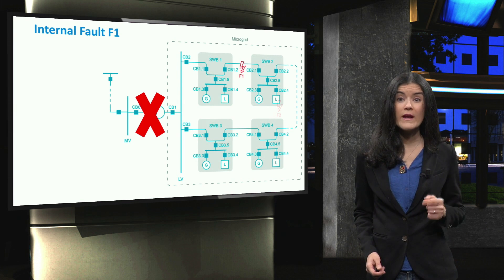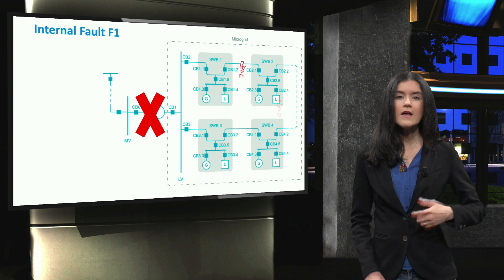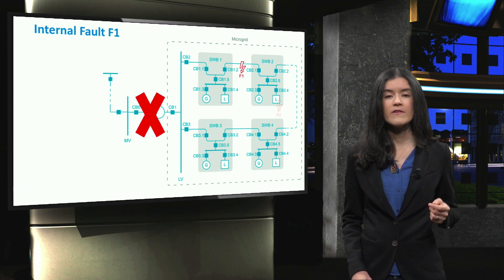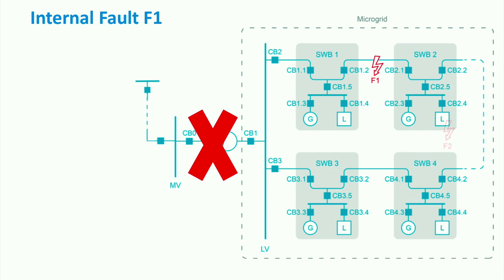Let's see what happens when F1 occurs during islanded mode. Just as discussed, when having high participation of distributed generators, there can be a sensitivity problem, enhanced by the fact that there is no high short-circuit current from the grid.